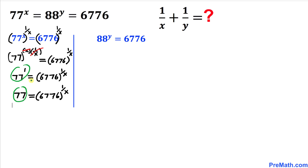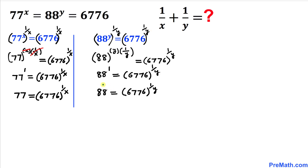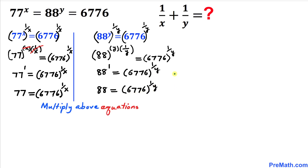Now let's manipulate the second equation by taking power 1/y on both sides as well. After repeating all the same steps, we end up with 88 = 6776^(1/y).